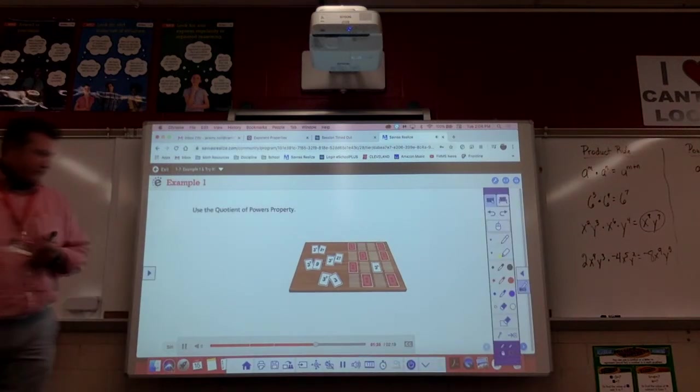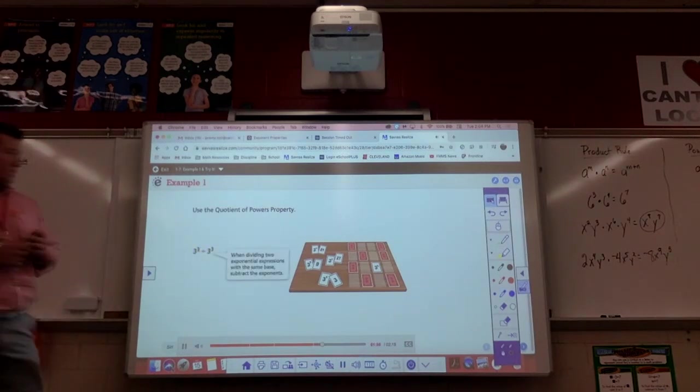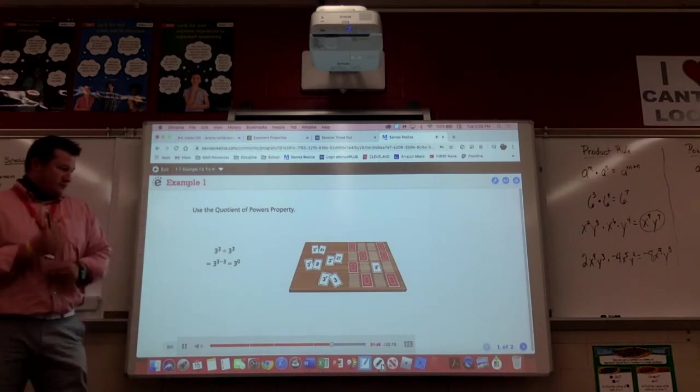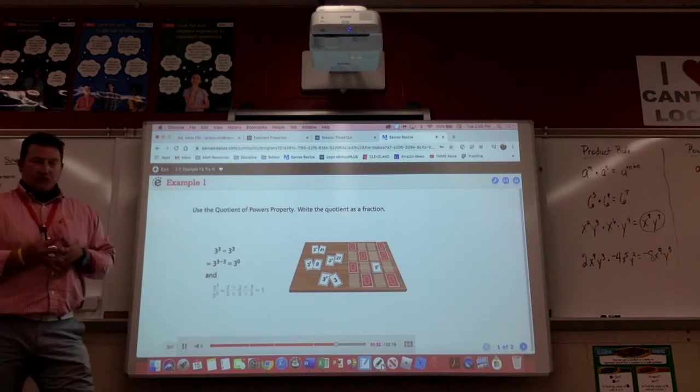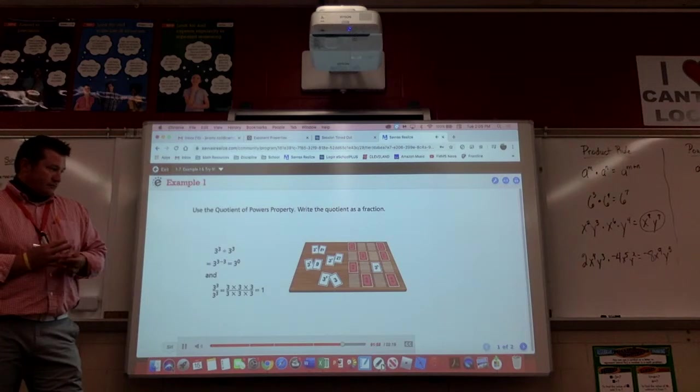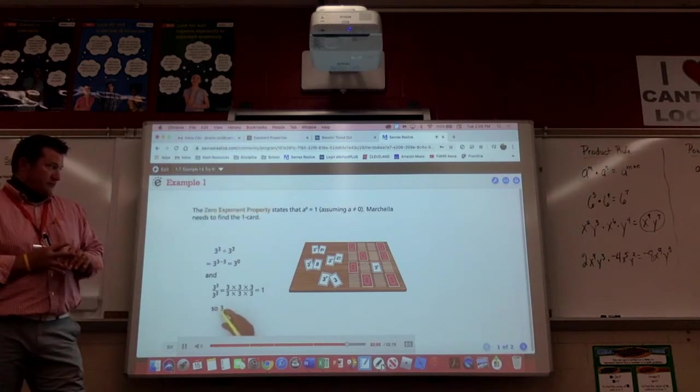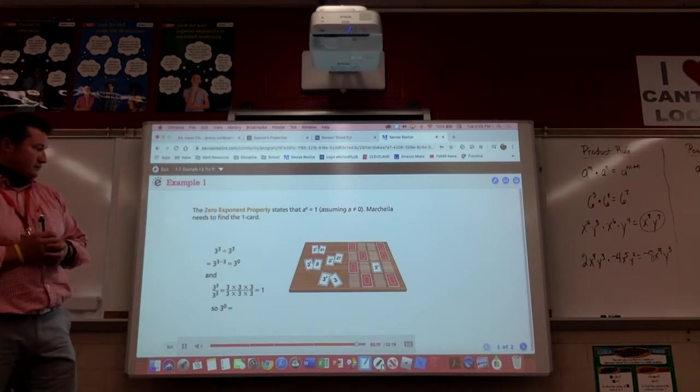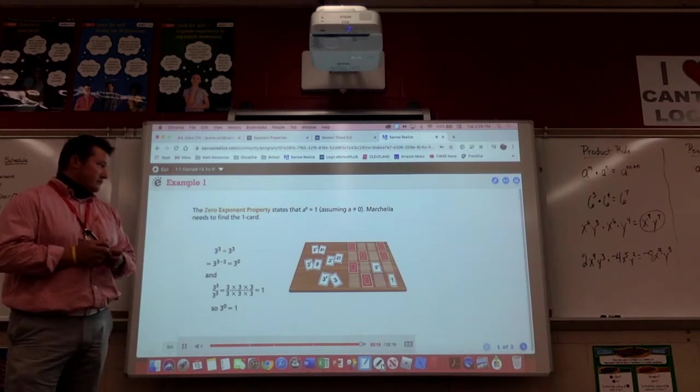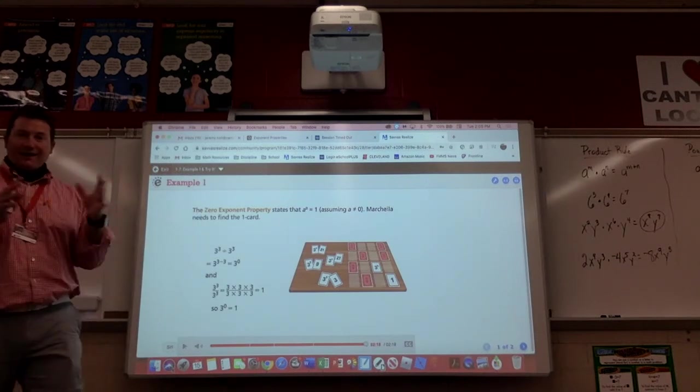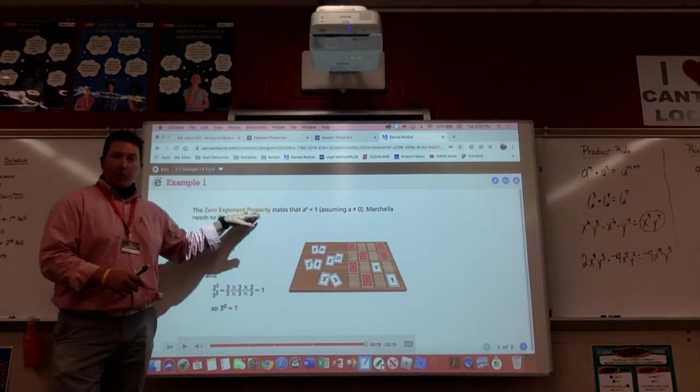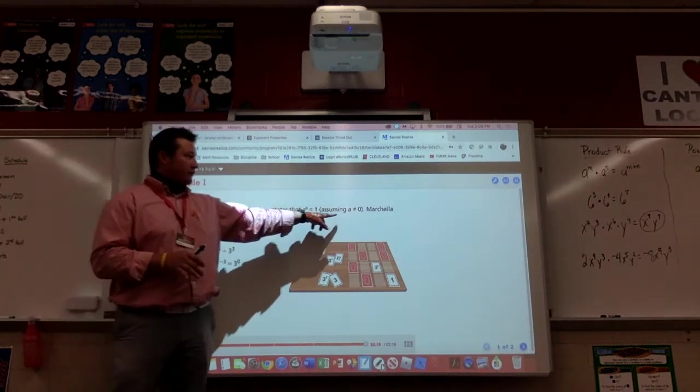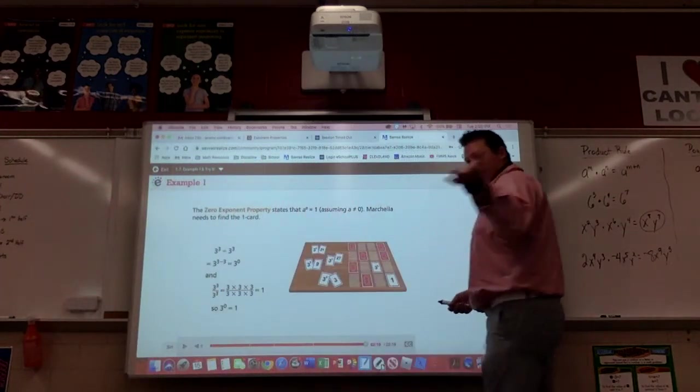You could also use the quotient of powers property to solve the problem. When dividing two exponential expressions with the same base, subtract the exponents. 3 to the power of 3 minus 3 is equal to 3 to the power of 0. You also can write the quotient as a fraction. Expanding each exponential expression shows that the fraction is equivalent to 1. The 0 exponent property states that a to the power of 0 equals 1, assuming a does not equal 0. And we get the same answer. Markela needs to find the 1 card. Nice job, Markela. So there's our formal definition. It's our 0 exponent property or 0 exponent rule. Any number you can think of in the whole wide world, raised to the power of 0 is 1, except of course if this guy is 0. The 0 to the 0 power cannot possibly be 1.